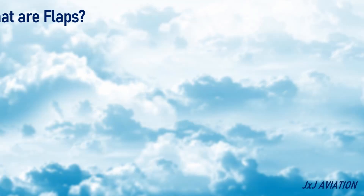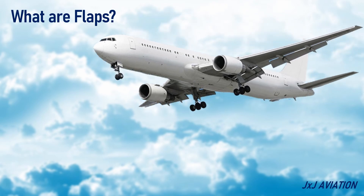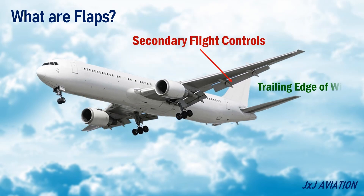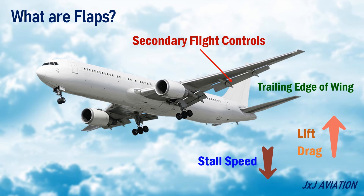First, let's understand what are flaps. Flaps are a type of secondary flight control surfaces, which are normally installed on the trailing edge of the wing. When the flaps are extended, they increase the lift and the drag, and reduce the stall speed. These factors play an important role during take-off and during landing.